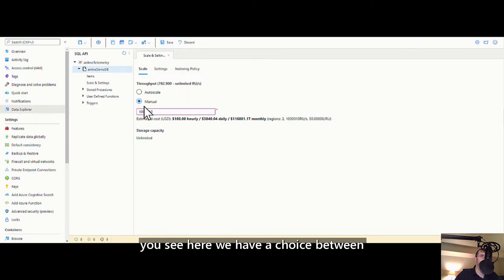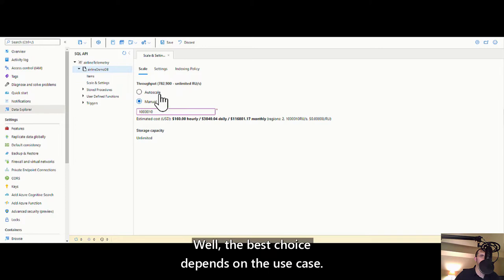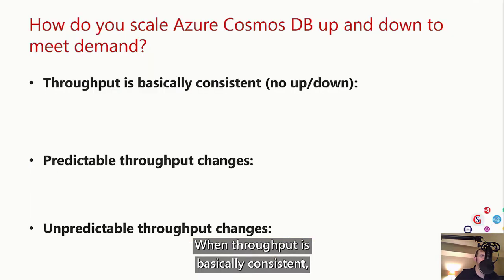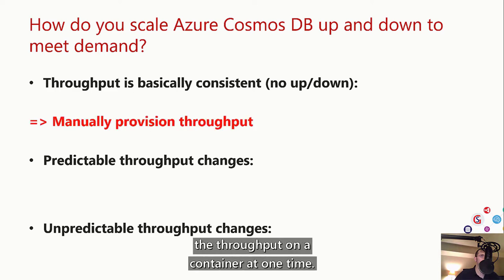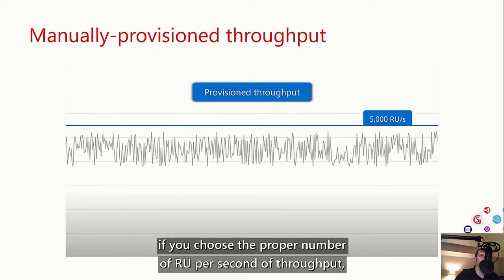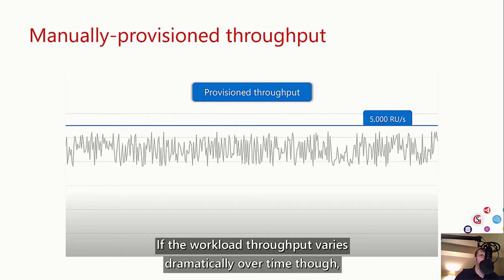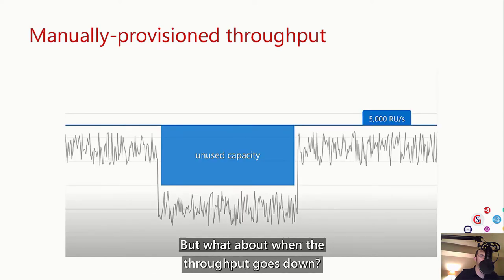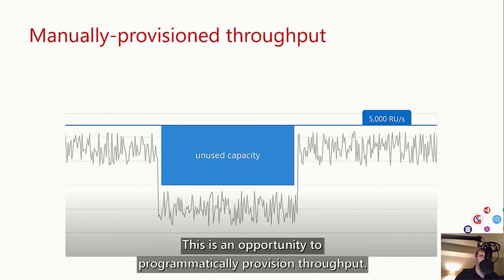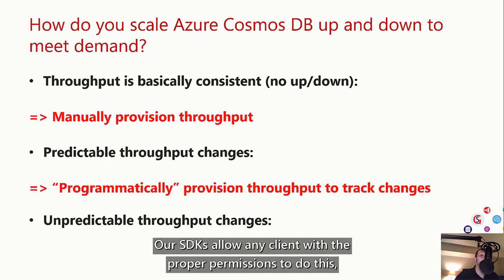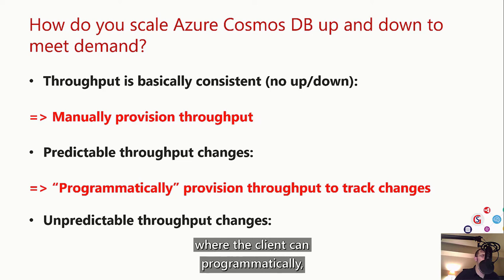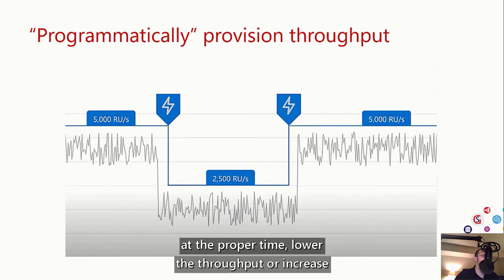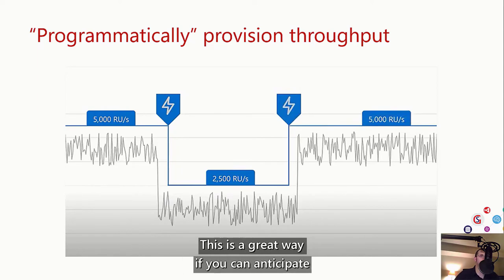Returning to the Azure portal, you have a choice between auto-scale and manual throughput. The best choice depends on the use case. When throughput is basically consistent — no up or down trending — it's enough to manually provision the throughput on the container one time. Just set and forget. If you choose the proper number of RU per second, you will not be over- or underpaying. If the workload throughput varies dramatically over time, you'll have to pay for the highest throughput you might use. This is an opportunity to programmatically provision throughput — our SDKs allow any client with the proper permissions to lower or increase the throughput so you're only paying for what you expect to consume in a given time window. This is great if you can anticipate traffic changes due to holidays or day-night cycles.